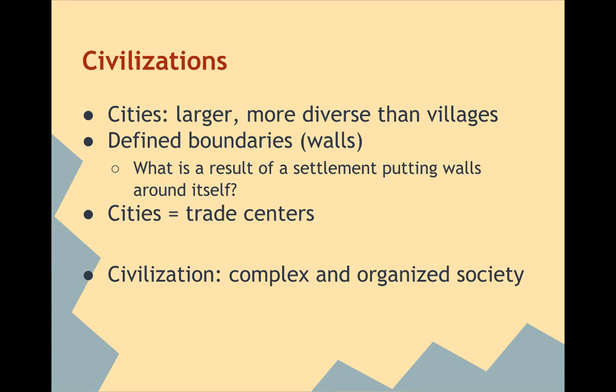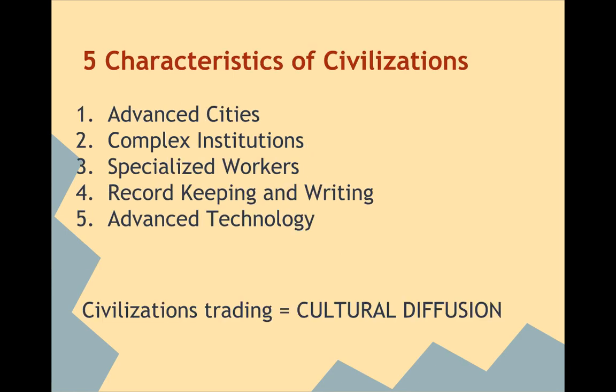The actual definition of a civilization is that it's a complex and organized society. There are five characteristics of civilizations: one, they have advanced cities; two, they have complex institutions — government, religion — something that has many levels; three, specialized workers; four, some sort of record keeping and writing, useful for laws as well as tax purposes; and five, advanced technology — developing things to progress their civilization and make jobs easier, such as irrigation.